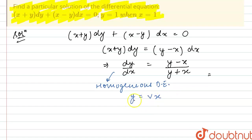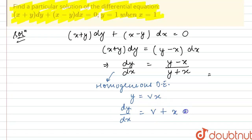Now differentiate both sides with respect to x. So we get dy/dx = using chain rule: v as it is, differentiation of x will be 1, plus x as it is, differentiation of v with respect to x will be dv/dx. And from here, we can say that y/x = v.